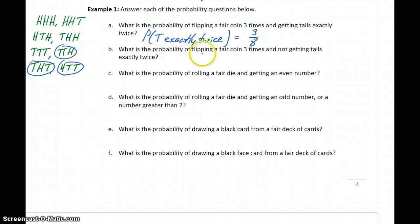In part b, what's the probability of flipping a fair coin three times and not getting tails exactly twice? So this statement is basically the complement of what we had in part a. So we can take one minus three eighths to get five eighths using that complement rule. Or we could come back to our sample space and circle all the possibilities where we don't get tails exactly twice. And in this case we have five different possibilities out of the eight total where we don't get exactly two tails. So either using the complement rule or going back to the sample space we can answer a question like that.